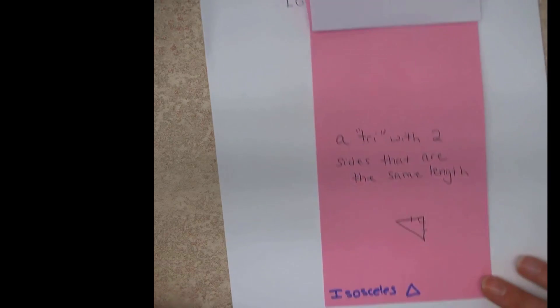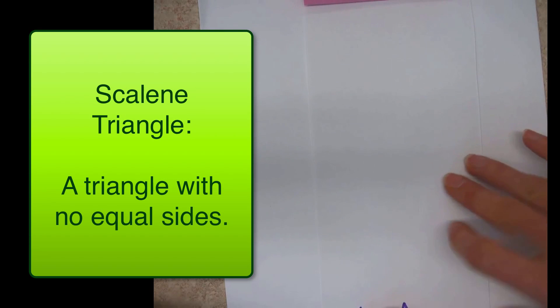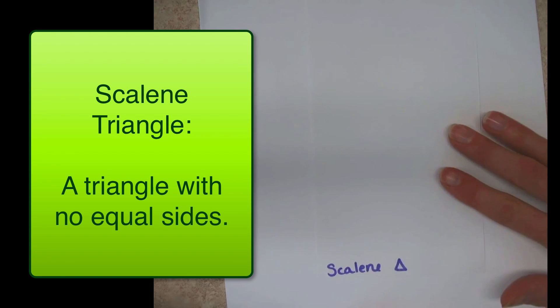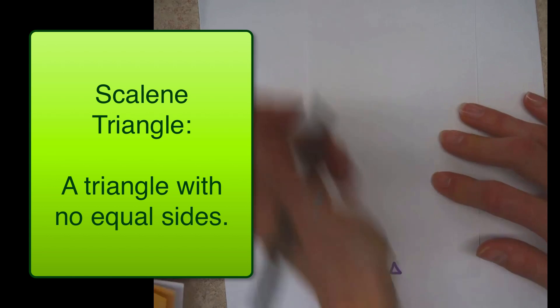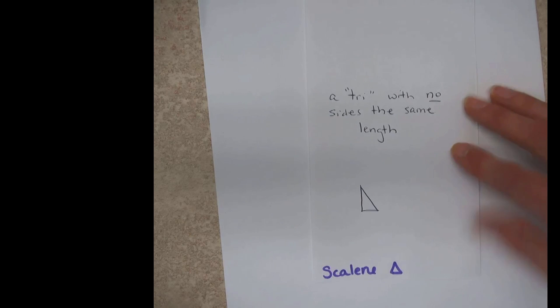And then the last one on there is a scalene triangle. And you may have guessed, equilateral has three sides that are the same, isosceles has two, scalene has none. A scalene triangle has no sides the same length.